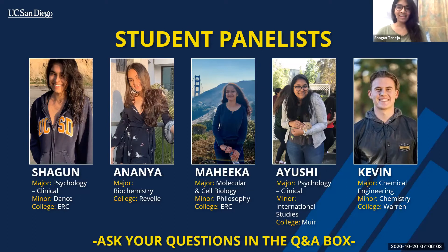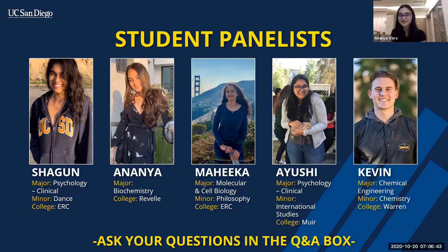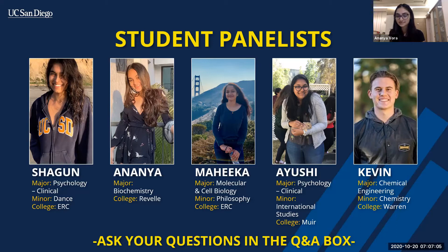I'm Shagun, and I'm a clinical psych major and a dance minor. I'm from Gurgaon in India, which is where I am right now. I'm in ERC. One shout out that I would like to give on campus would definitely be ERC — because even though it's kind of far, it's beautiful, and I cannot imagine living anywhere other than ERC. My name is Ananya, and I'm a biochemistry major from Revell. I'm a second year and I'm in Mumbai right now. My shout out would definitely be Scripps, because it's one of the most gorgeous parts of campus and I just love the beach.